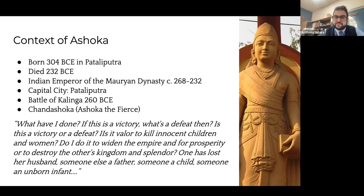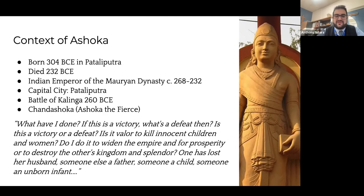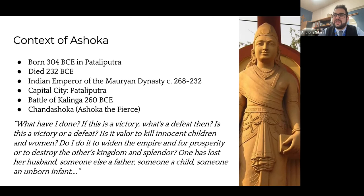Ashoka was a prince born in 304 BCE in Pataliputra, the capital of the Mauryan dynasty. He wasn't first in line to the throne but through conquests eventually became emperor. The most critical awakening moment of his life came in 260 BCE when he engaged in the Battle of Kalinga. The battle was a disaster — 100,000 plus people dead. His nickname at the time was Chand Ashoka, meaning Ashoka the Fierce, attributed to his fierceness and violence.